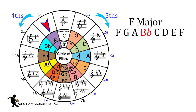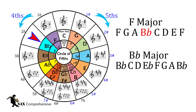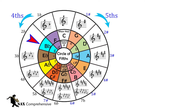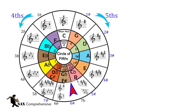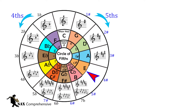Now we can start with the scale of F and count four notes. That brings us to B flat, which is the next key. This has two flats: B flat and E flat. We can continue around the circle in this fashion, adding flats until we reach C flat major and its relative minor, A flat minor. If we continue around the circle until we reach C again, the key and scale will continue to change by a fourth.